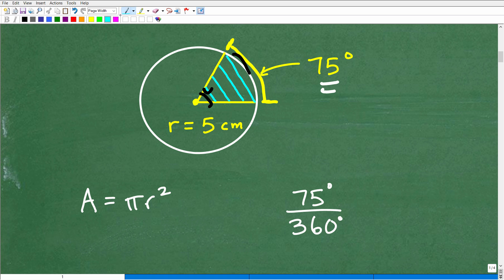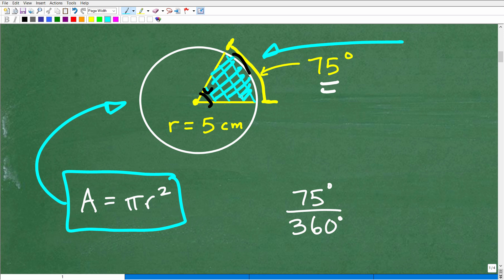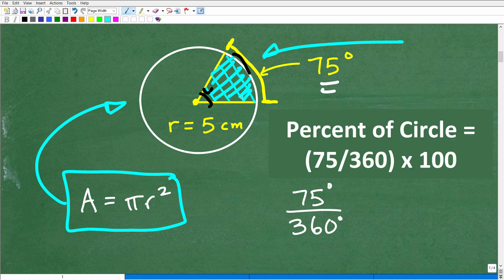So now kind of just standing back here, what are we trying to do? Well, we're trying to find the area of this entire circle first, but that's not the actual area we want. We want the area of this little pizza slice. We want the area of this portion of the circle. So how much, what percent of the circle are we looking for? How much of the circle are we seeking to find the area from?